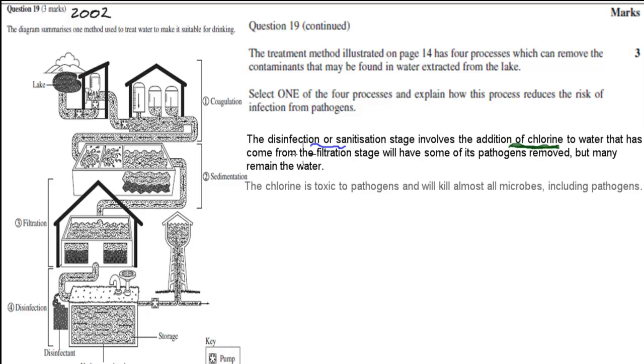So then I said chlorine, which was added at the disinfection stage, is toxic to pathogens, and will kill almost all microbes, which includes the pathogens. So that is why the chlorination stage is good, because it will add chlorine, which kills the actual pathogens. So now we've done two things: we have named the actual stage, and we said how it would help kill pathogens. We haven't said yet what that means in terms of killing pathogens, and this is the last point.